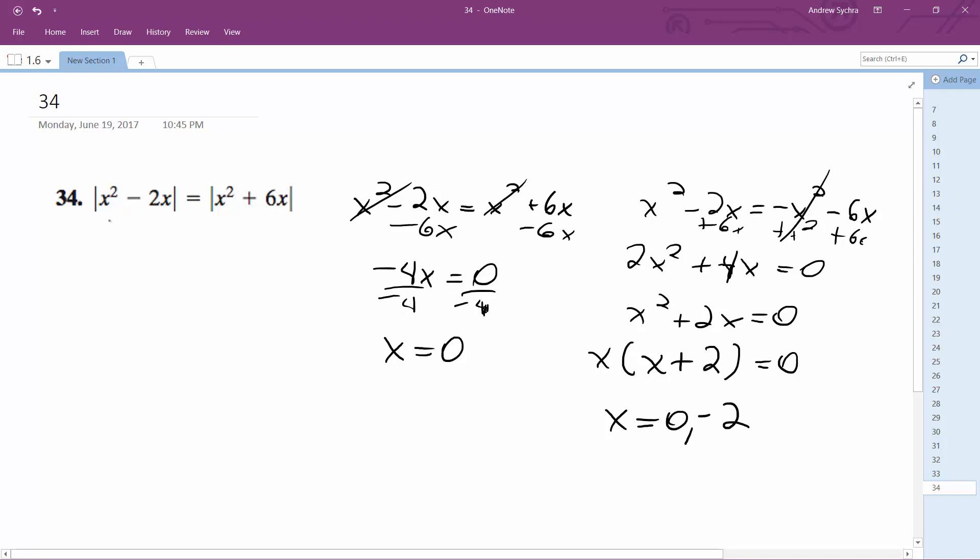Alright, so we plug in negative 2, so we get 4 minus negative 2, so that's plus 4, so we get 8. Absolute value of 8 is 8. Here it's 4 minus, well, 6 times negative 2 minus 12, which gives us negative 8, but the absolute value of negative 8 is 8.